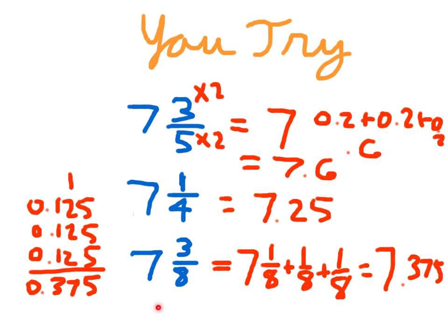Now if I had asked you to order these from least to greatest, I now have the decimal forms. I'd know that 7 and one fourth would come first, 7 and three eighths would come next, and then 7 and three fifths. That's a reason why you would want to make decimals out of these. Remember, it's all about mental math.